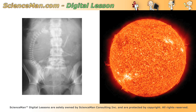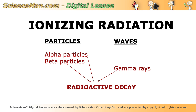Alpha particles, beta particles, and gamma rays can all result from radioactive decay. Without going into too much detail, radioactive decay occurs in unstable isotopes. In an effort to become more stable, the unstable nucleus of an isotope may emit particles or emit energy in the form of gamma rays.